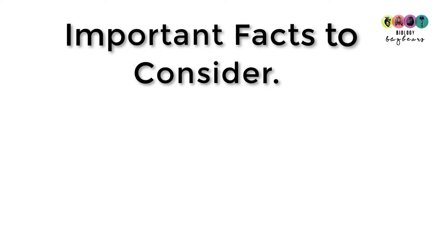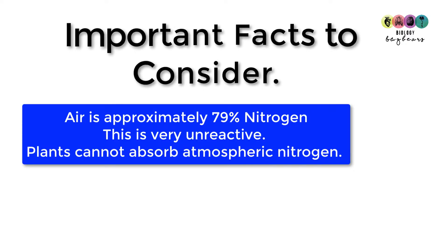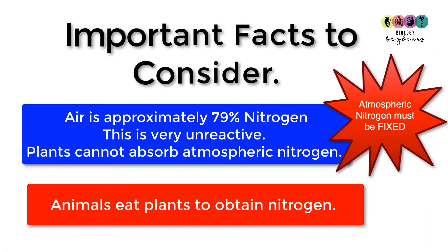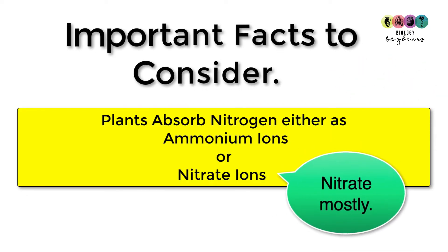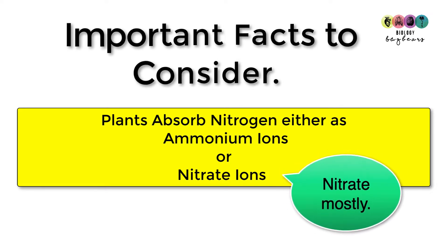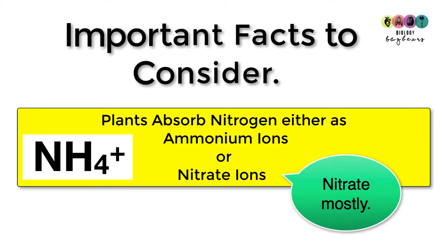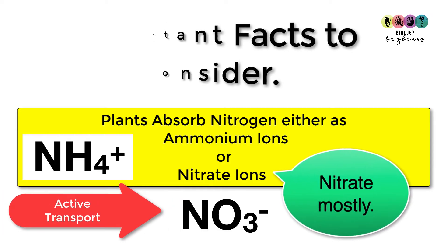Before we begin the nitrogen cycle, let's consider some important facts. Firstly, most of the air is nitrogen — approximately 79% — however it's in a really unreactive form that is not readily available to plants. Plants cannot absorb atmospheric nitrogen directly, so it has to be changed or fixed. Secondly, animals mostly get their nitrogen by eating plants that have assimilated nitrogen-containing compounds. And plants usually get their nitrogen by absorbing ammonium ions or nitrate ions, but mostly nitrate ions.